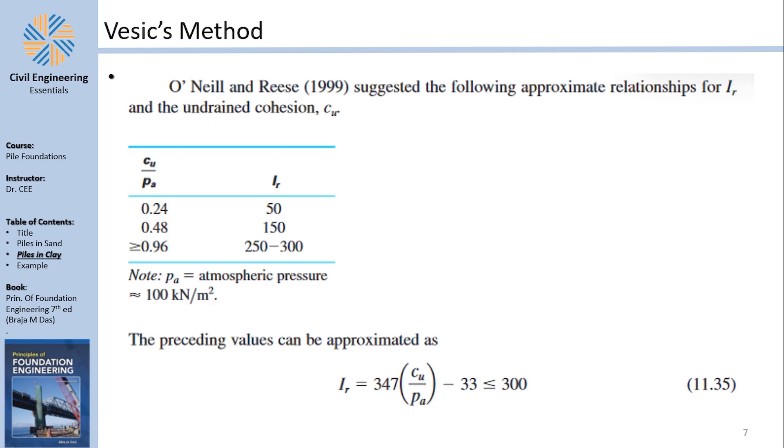Now, if you want to continue, O'Neill and Reese suggested the following approximation for Ir, and it's a different one here. It divides Cu over Pa, and by magic trick, you get Ir. Why do you need Ir? Because you want to find Nc. You remember that. And of course, here, another value is this equation. I think that this equation is what is denoted here by O'Neill and Reese. This is a screenshot from the book, so take a look on that if you want. It's 11.35.